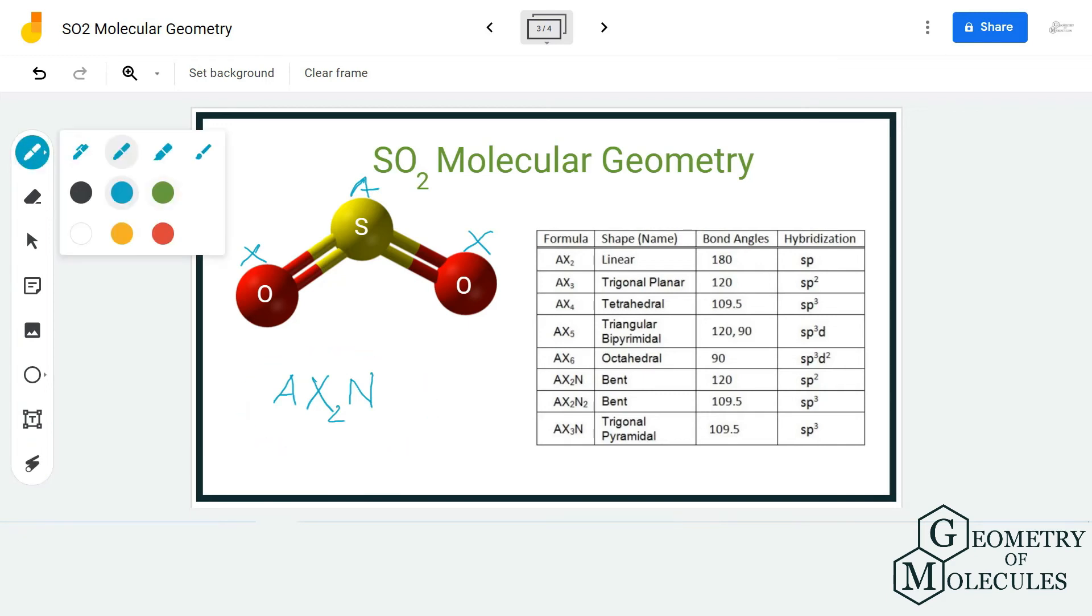If you refer to this table here, you can see that the molecules that have AX2N formula have bent molecular geometry. So the molecular geometry of SO2 is bent.